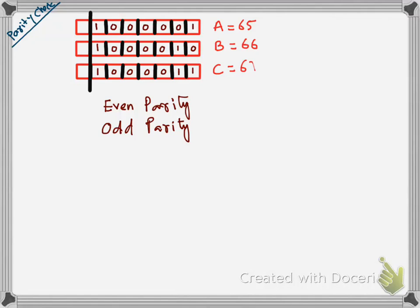In even parity, the sending computer counts the number of ones in each byte. For the byte representing A, there are two ones — that number is already even, so we put a zero in the parity bit. For B, there are also two ones — already even, so we put zero. For C, there are three ones — that's odd — so we put a one to make it even.